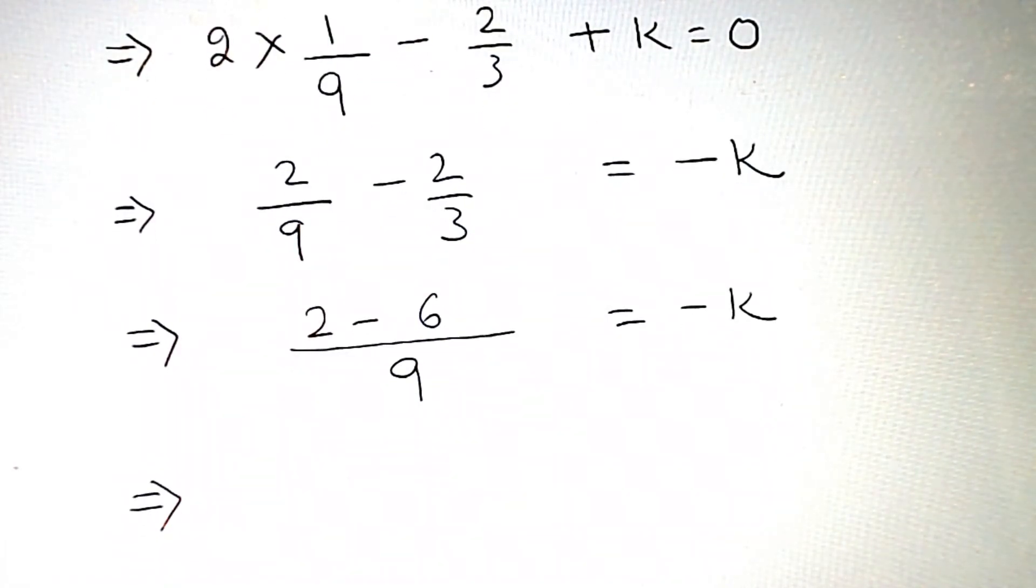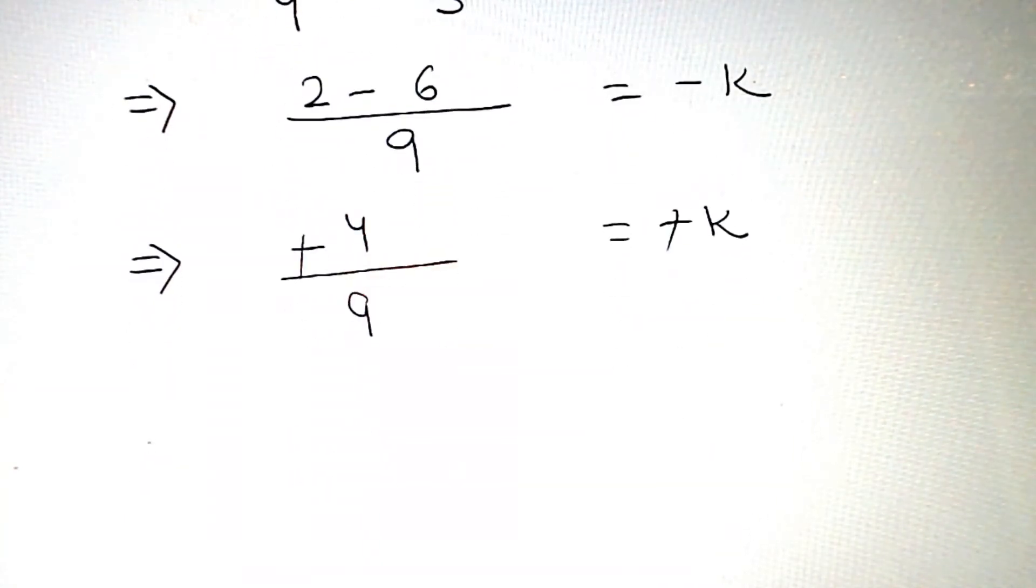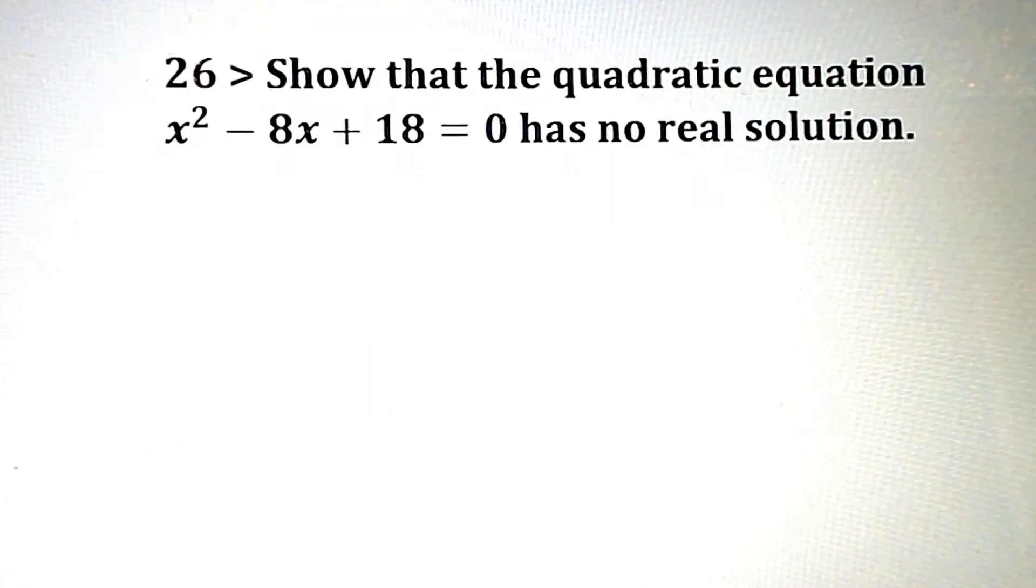2 minus 6 is minus 4 divided by 9 equals minus k. Minus minus will get cancelled, therefore 4 by 9, so k ka value is 4 by 9.